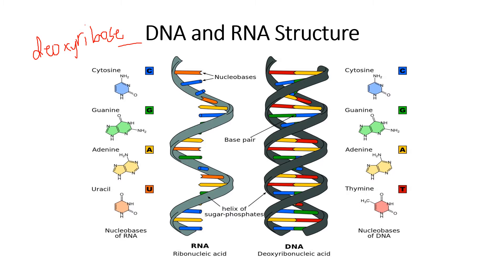DNA and RNA seem to be made up of the same bases except for one. Both DNA and RNA have cytosine, guanine, and adenine. But where DNA has thymine, RNA has uracil — so uracil replaces thymine in RNA. Cytosine always binds to guanine whether in RNA or DNA. In RNA, adenine always binds to uracil, while in DNA, adenine binds to thymine.